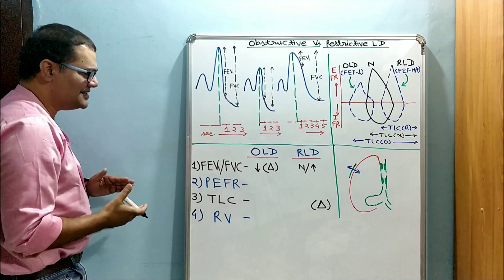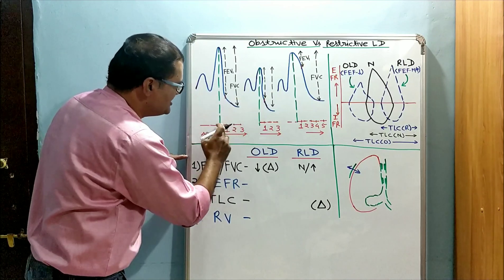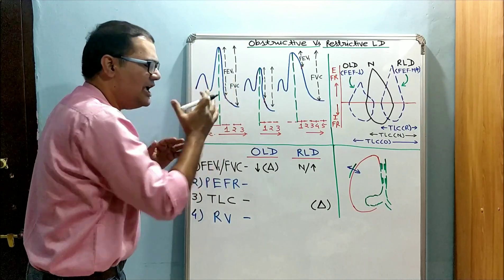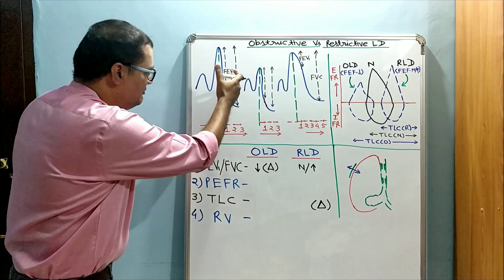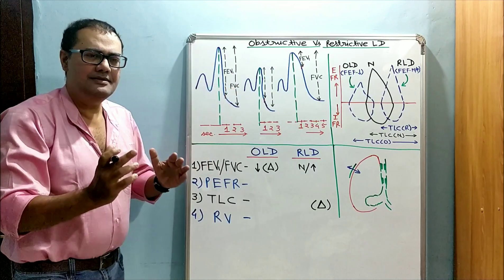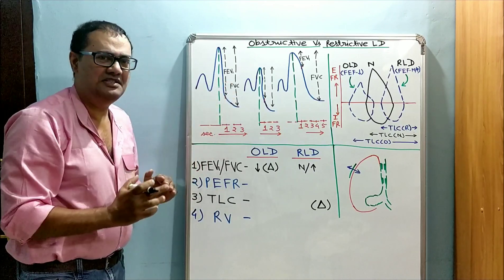Let's understand this. When forced vital capacity is performed in a healthy person, it is completed in three seconds. The amount of air which is exhaled at the end of one second when forced vital capacity is performed is called FEV1, and this is 83% of forced vital capacity. So the ratio is 83%.